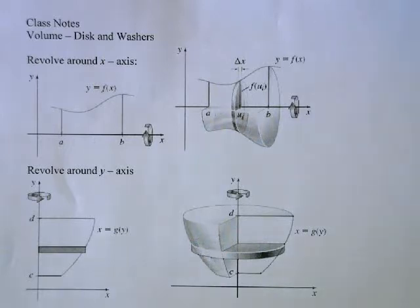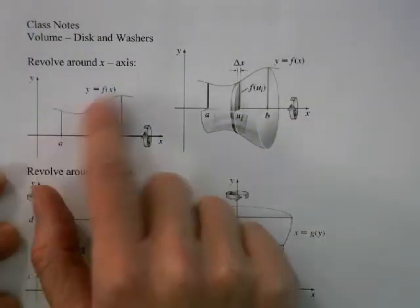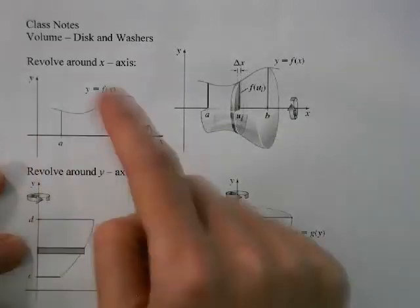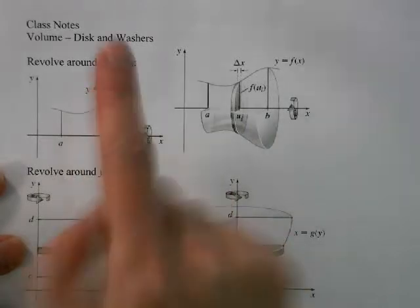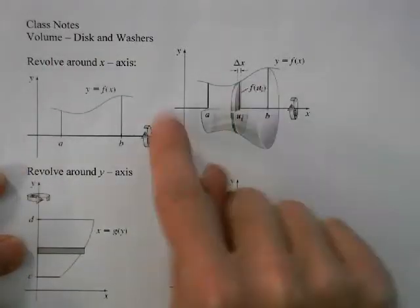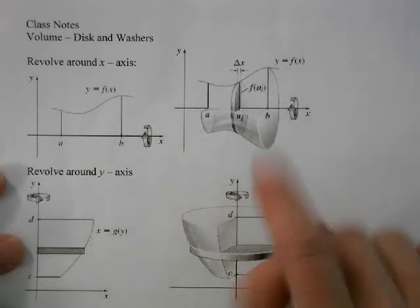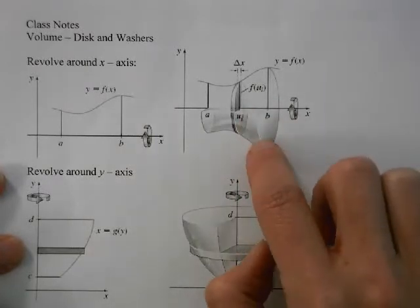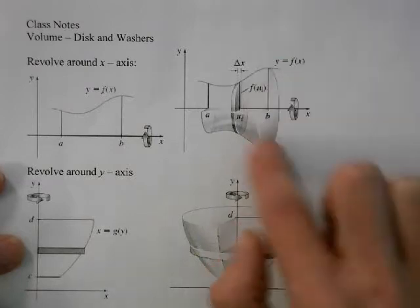Today we're going to talk about volume and a specific method of finding the volume of what we call solids of revolution. If you picture some mystery function, we're going to rotate this cross section around the x-axis, forming a solid that looks like this. This is called a solid of revolution because we're revolving something around an axis.